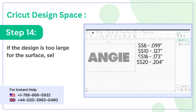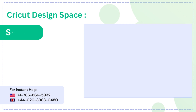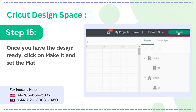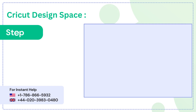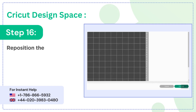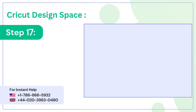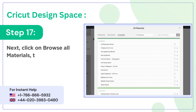Step 13: resize the design until the circles are the right size. Step 14: if the design is too large for the surface, select the design, click on combine and unite, then edit the design. Step 15: once you have the design ready, click on make it and set the material load type to on mat. Step 16: reposition the design on the mat, then go ahead and click on continue.